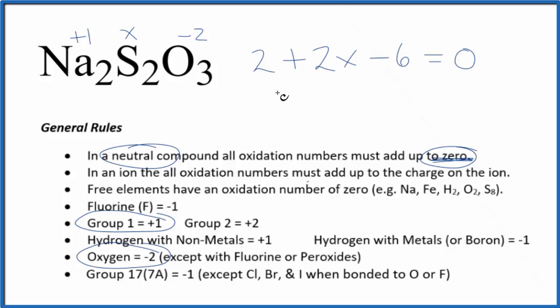Then we just solve for X. We have two X minus four equals zero. Add four to both sides. Two X equals four. Divide both sides by two. We get X equals a positive two. So for the sulfur here in Na2S2O3, we have an average oxidation number on each sulfur here that's going to be plus two.